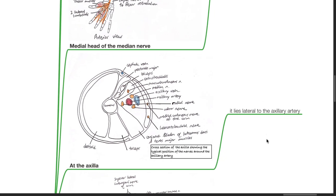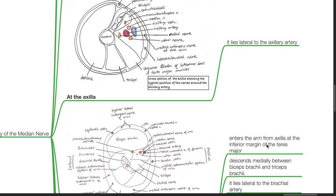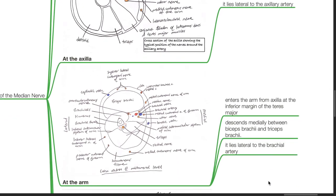At the axilla, it lies lateral to the axillary artery. At the arm, it enters the arm from the axilla at the inferior margin of the teres major. It descends medially between the biceps brachii and the triceps brachii and it lies lateral to the brachial artery.